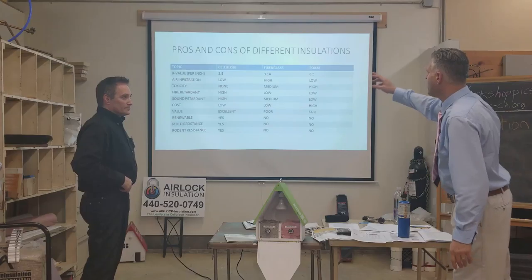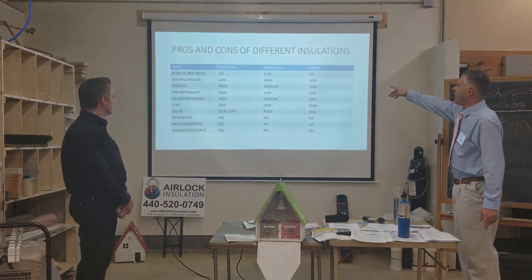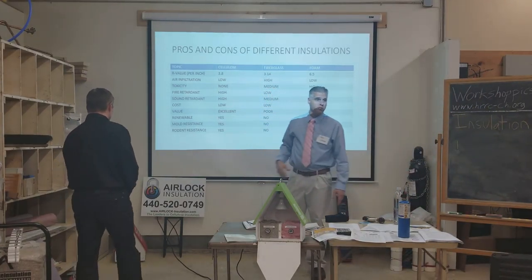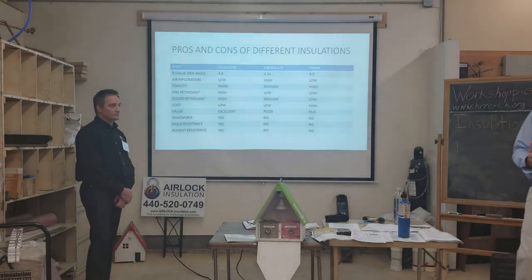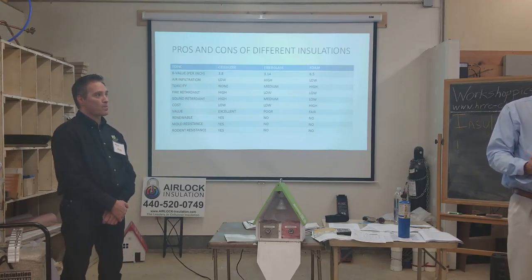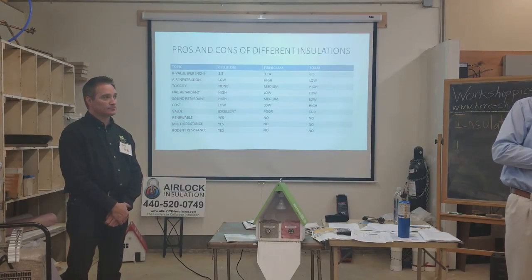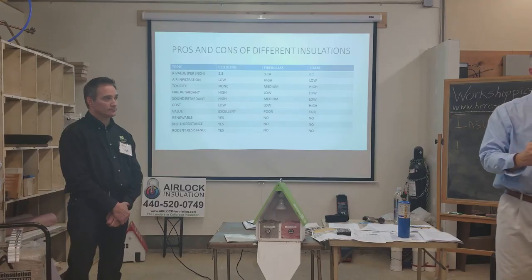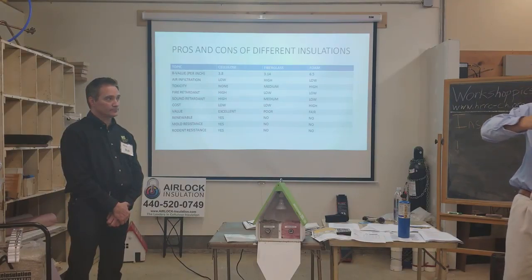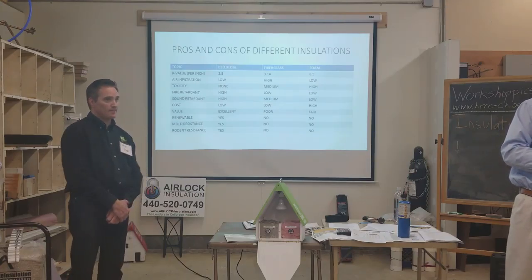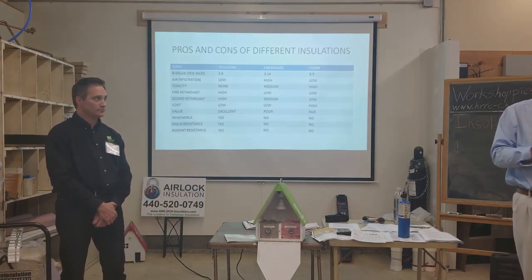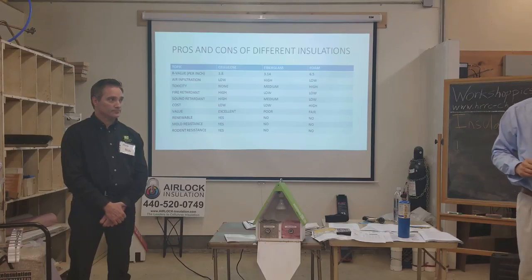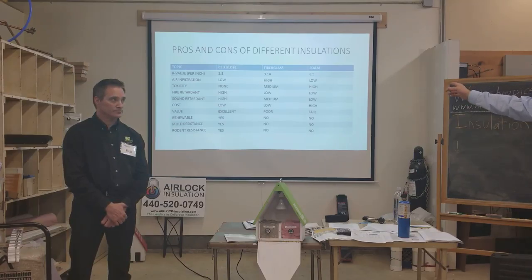In the R-value category, foam is at 6.5 per inch — about twice what cellulose and fiberglass do. The only problem when you're injecting foam is that you're not getting a lot of foam in there. When you inject a tube and blow foam in, versus dense-packing where I pack it, pull it back, pack it, pull it back, compressing the insulation as much as possible — with expanding foam it just expands to the space allowed. It doesn't push and compress the way cellulose does. So in an existing wall, you're not going to achieve 6.5 R-value per inch.